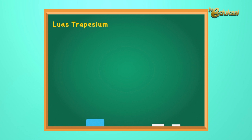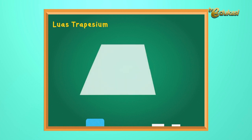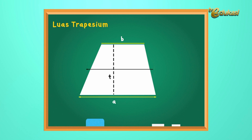Agar anak-anak lebih paham, perhatikan gambar trapezium berikut. Panjang sisi bawahnya sama dengan A. Panjang sisi atasnya sama dengan B. Dan tingginya sama dengan T. Kemudian, Bapak bagi trapezium menjadi dua bagian, sehingga tingginya masing-masing sama dengan setengah T. Lalu, Bapak buat satu garis lagi seperti ini.